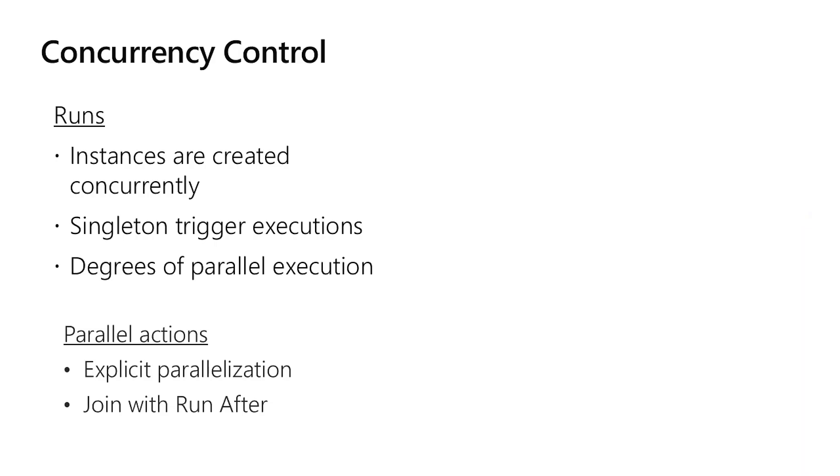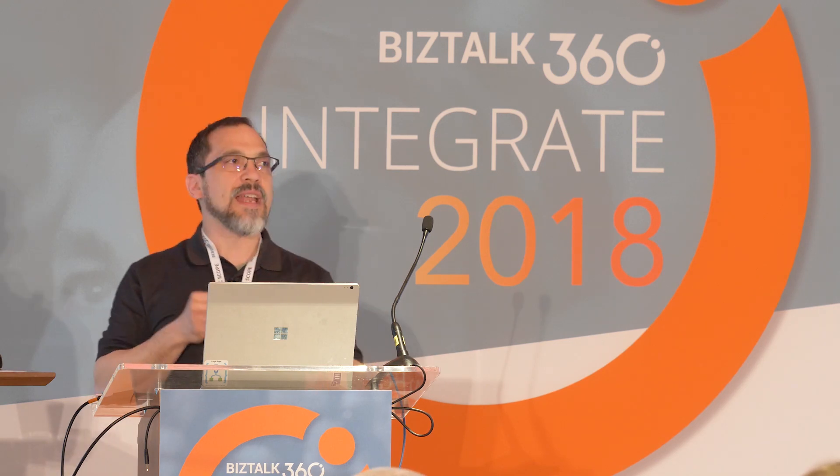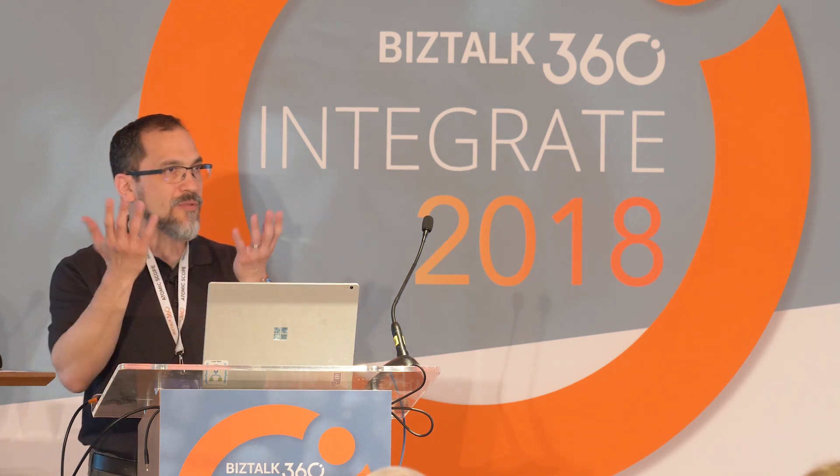You also have parallel actions. In a Logic App you can have two, three, four, or five actions run in parallel in your definition. They get joined using the run-after property — saying it will run after A, B, and C — which acts as a join in your Logic App.